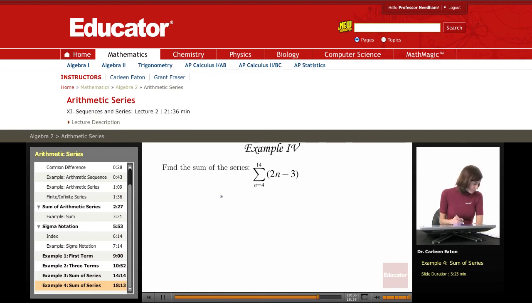So to find the sum of the series, let's start by finding the first term because we know we're going to need that. So a sub 1, we're going to begin with 4. So the first term n is going to equal 4. So it's 2 times 4 minus 3. A sub 1 equals 8 minus 3. So the first term is going to be equal to 5.